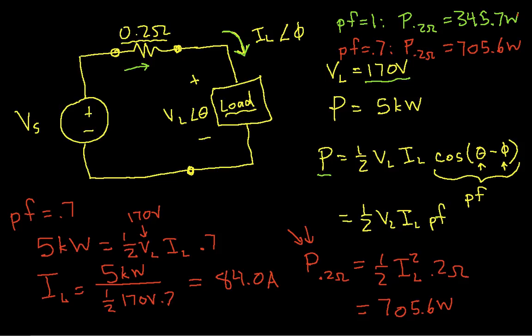So if you think about it, if you're the power company and your job is to deliver 5000 watts to the load, you have to generate more electricity with a power factor of 0.7 than you do with a power factor of 1. Because more of your power is going to be lost in transmission. So this is why utility companies really like to have power factors close to 1.